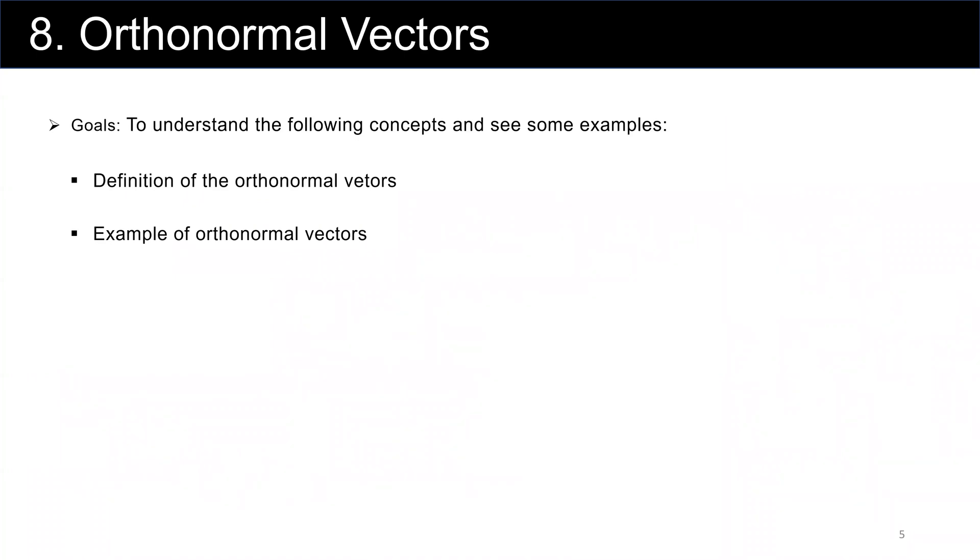The next topic is orthonormal vectors. In order to understand orthonormal vectors, we are going to focus on these two categories. First, the definition of orthonormal vectors, which includes the definition of orthogonal vectors and the definition of normalized vectors. Then we will see some examples of orthonormal vectors.